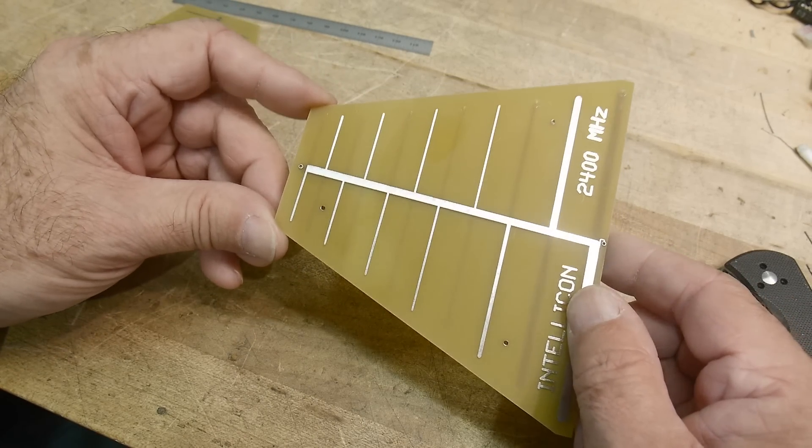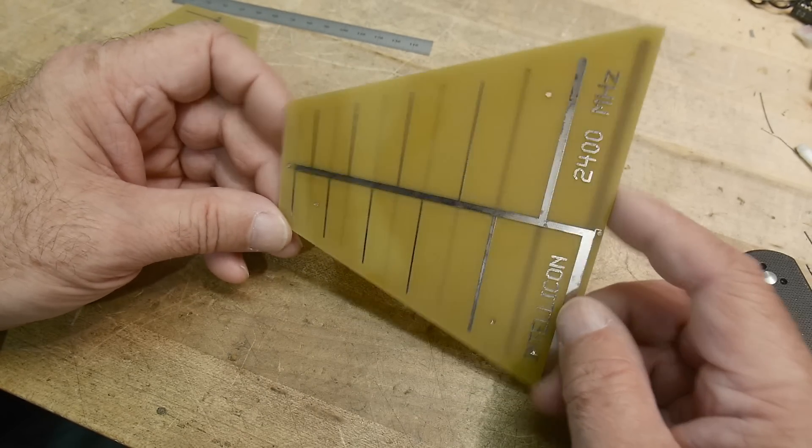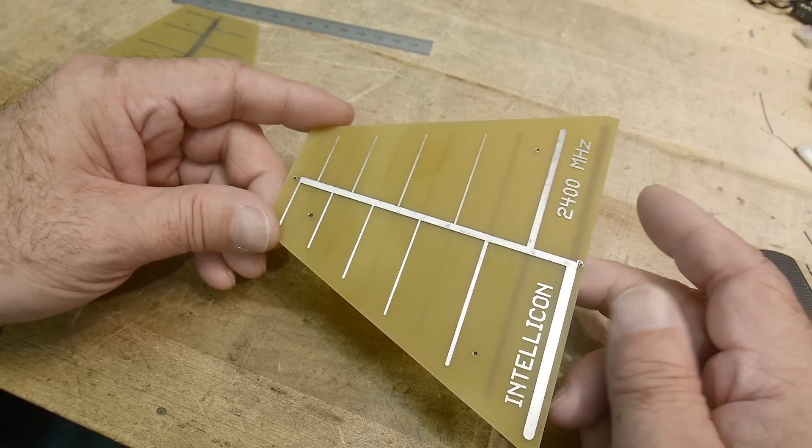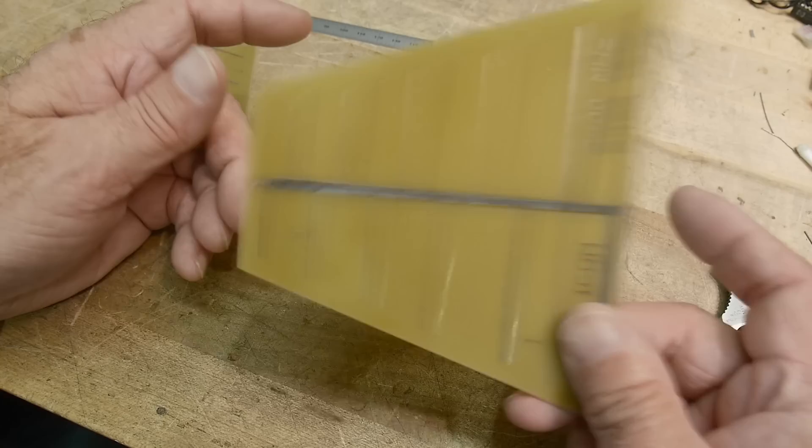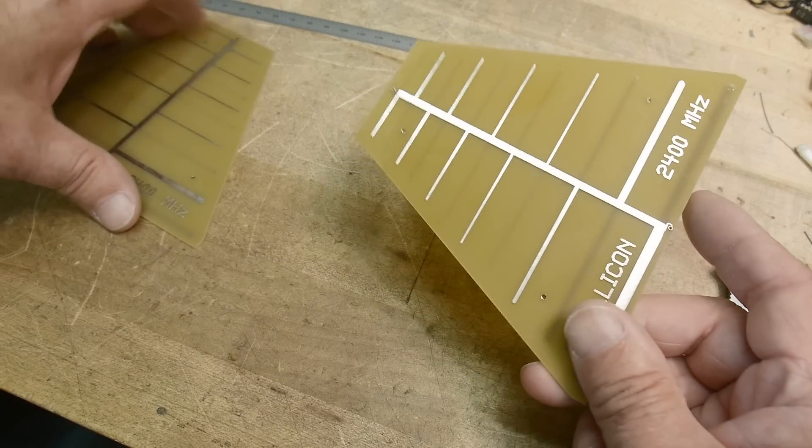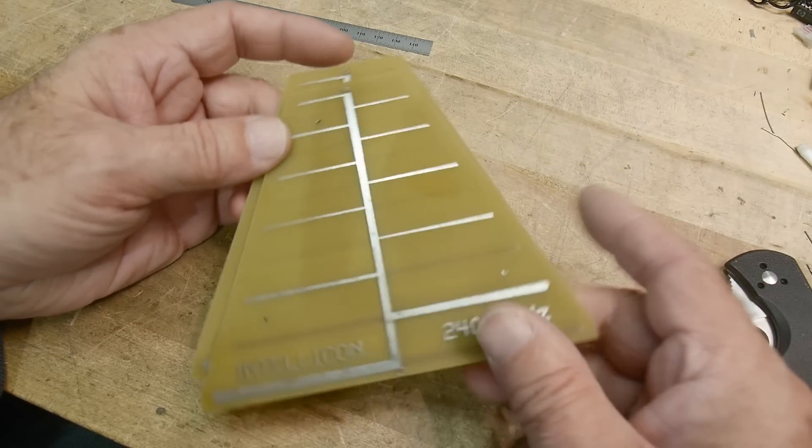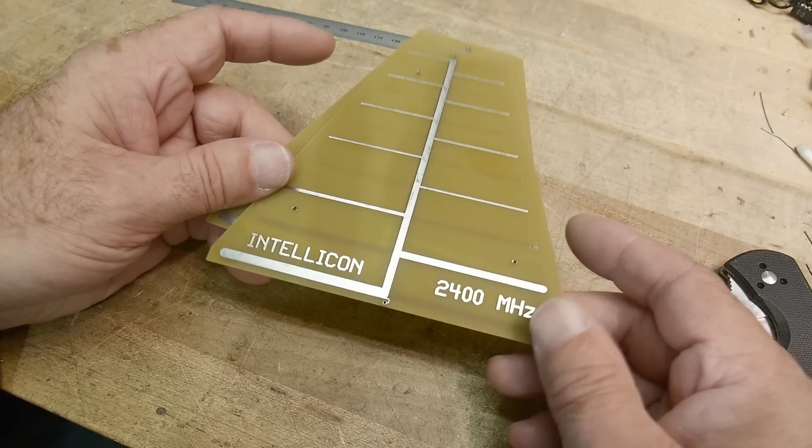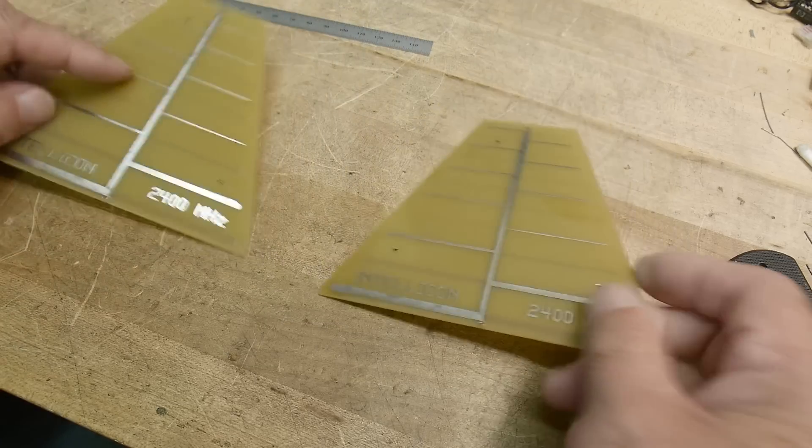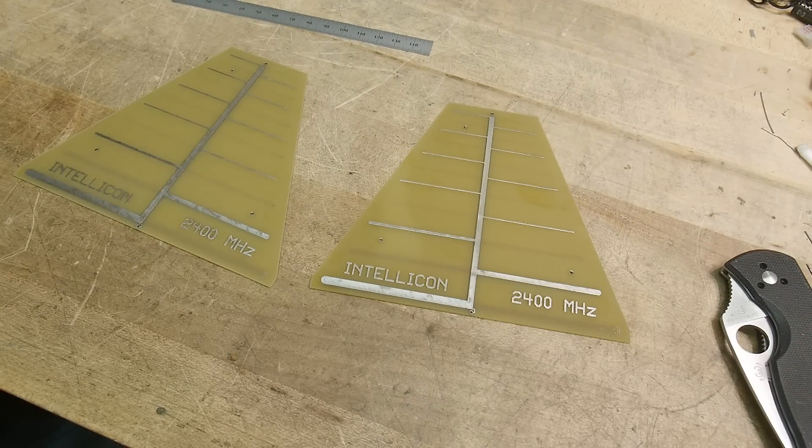You can buy them all put together. I think you maybe pay 20 bucks for something like that. And these were, I got two of these for $5. So these are cheaper to go this route and should be what I need. Let's build one up and measure it and see how it performs.